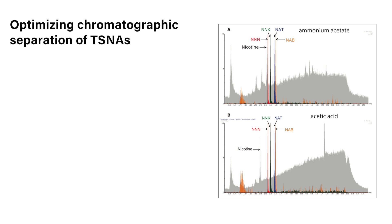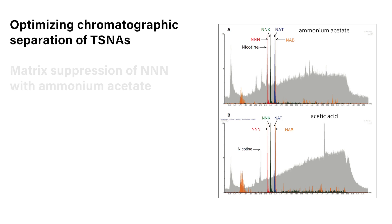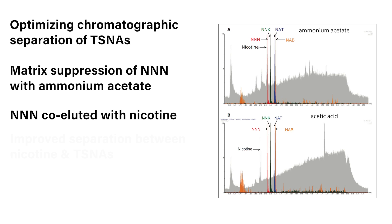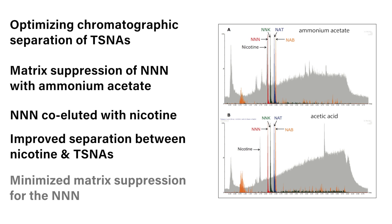Two different mobile phase additives were tested during method development. Significant matrix suppression was observed for N-nitroso-nor-nicotine using ammonium acetate due to coelution with a high-intensity peak. The use of acetic acid improved separation between nicotine and TSNAs while minimizing matrix suppression for N-nitroso-nor-nicotine.